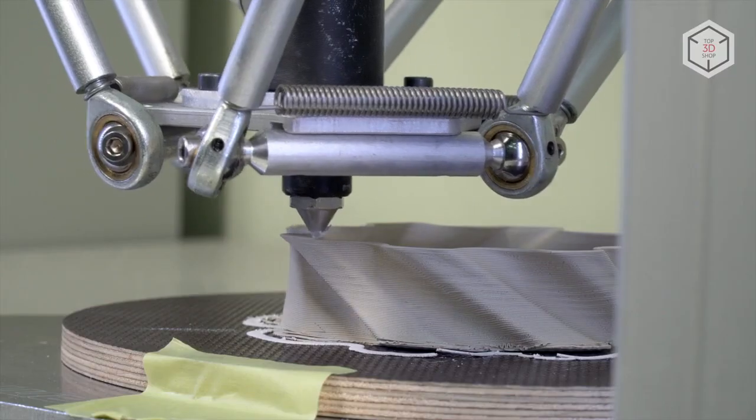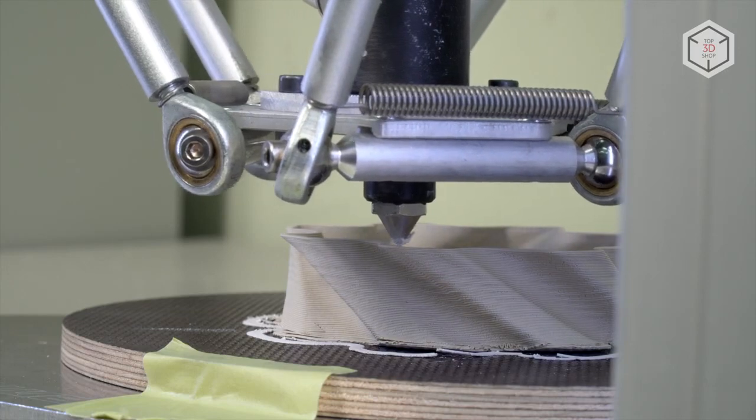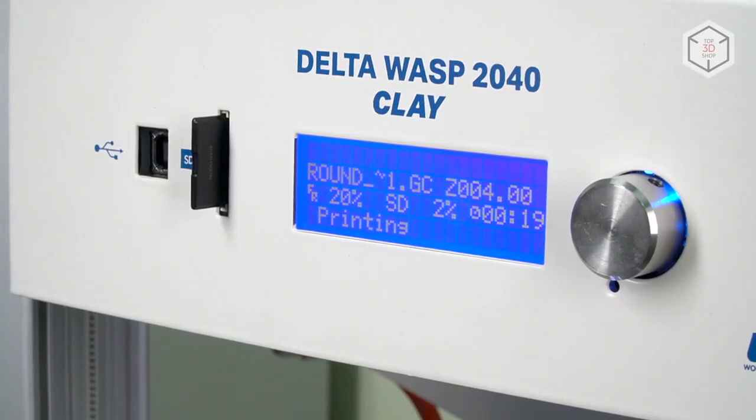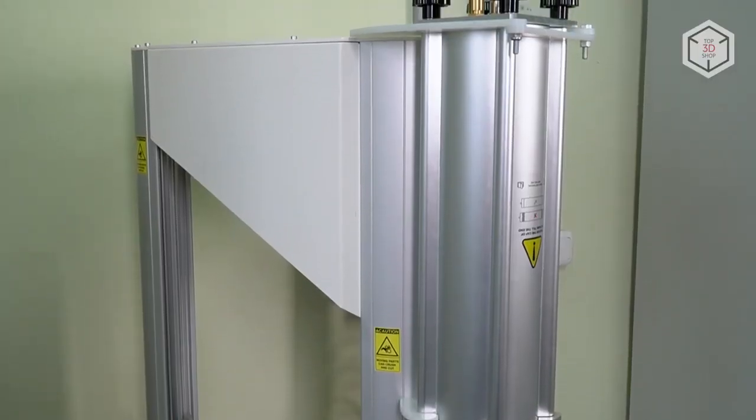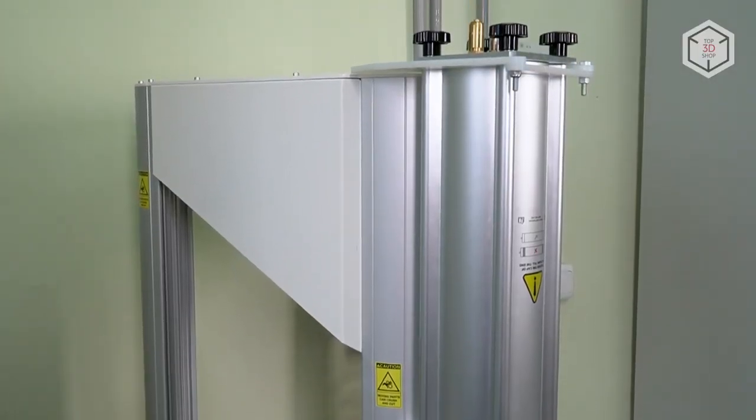The build area of the device is a cylinder with the diameter of 20 centimeters and a height of 40 centimeters. The WASP 2040 Clay features a system that will save your print job and resume it in case of a blackout.